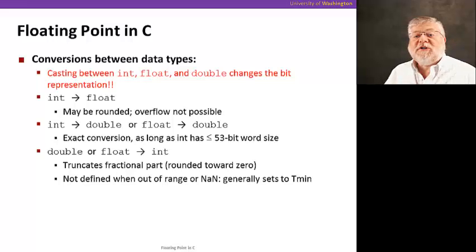Another thing we should talk about is casting in C. Unlike casting between signed and unsigned integers, in this case we do change the bit representation. So, for example, when we want to go from an int to a float and cast an integer value into a floating-point value,